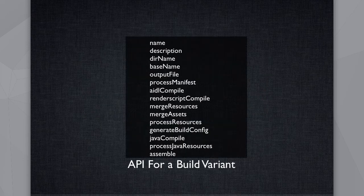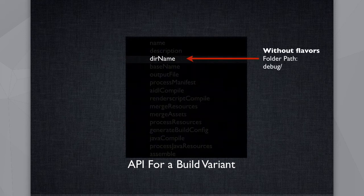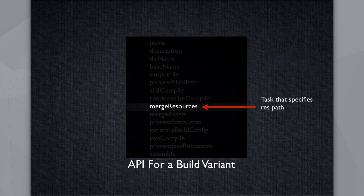Each variant provides a rich API. We saw there's a dirName property — without flavors it points to debug, and with flavors it points to debug/flavor-name. But even better, you just want to look at the merge resources task, which has an object that specifically points to where the resources are. So you can totally avoid all that extra string-parsing work. Pay attention to the API your dependencies expose.